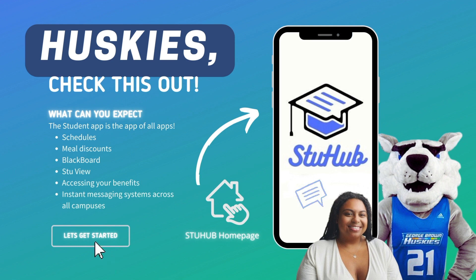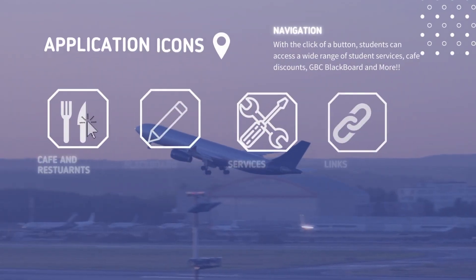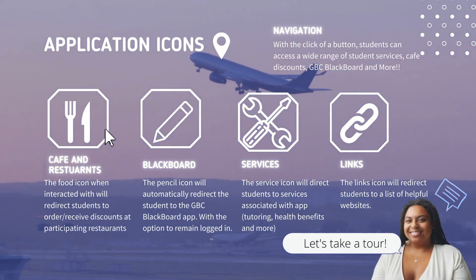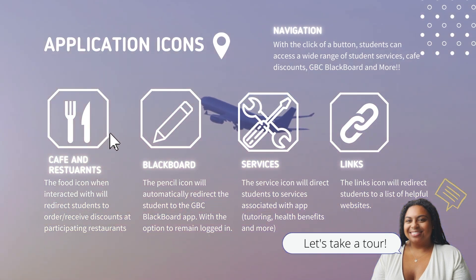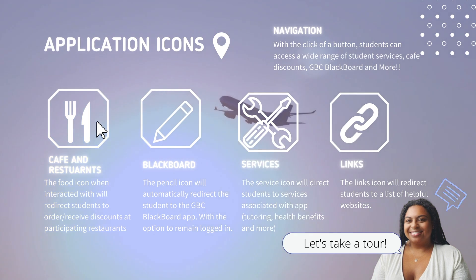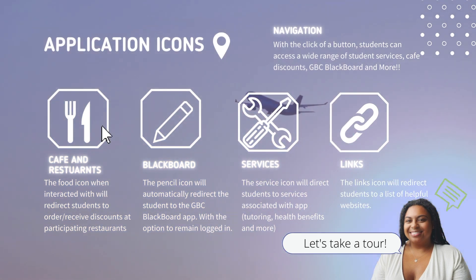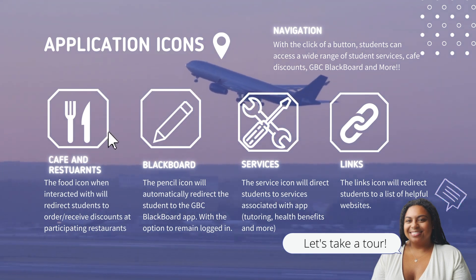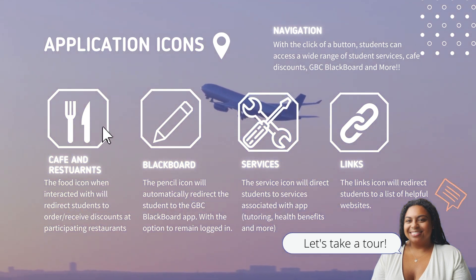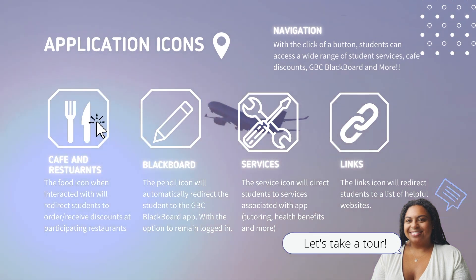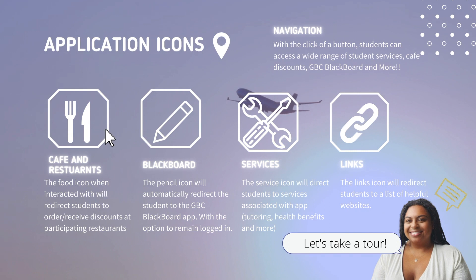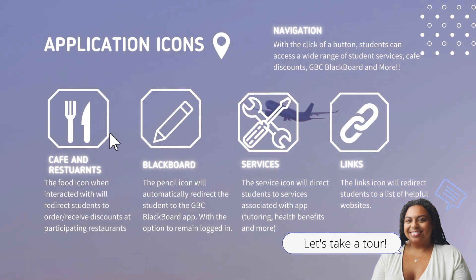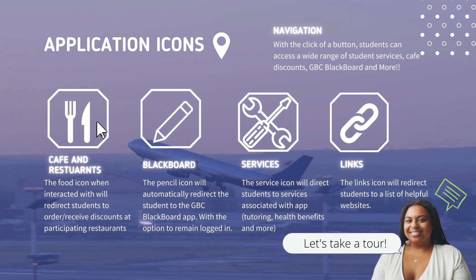Here you can see the StuHub homepage. Let me be your co-pilot and help navigate you through the StuHub app. Our first destination is the food app — hope you're hungry, because it's time to grab a bite. By clicking the food icon, the user will be redirected to a site that will allow them to place orders and receive meal discounts with participating cafes and restaurants. Our second destination is the pencil icon. By interacting with this icon, you can stay on top of your work with easy access to GBC Blackboard.